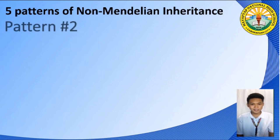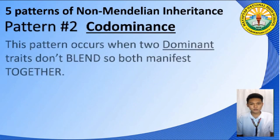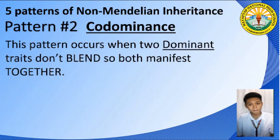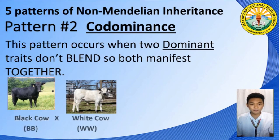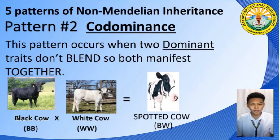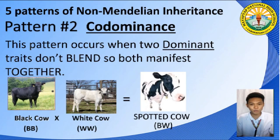Pattern number two is called Co-Dominance. This pattern occurs when two dominant traits won't blend together like in the first pattern. As a result, these two dominant traits will manifest together in an organism. Let us have cows for example. In cows, there are two dominant coat colors which are black and white. If a black cow is mated with a white cow, white and black do not blend and become gray. Instead, these two colors will manifest together in their offspring. So if a black cow is mated with a white cow, you will have a spotted cow which has both the colors black and white in its coat. That is Co-Dominance.